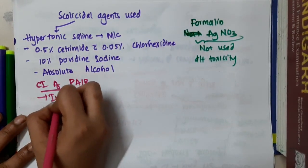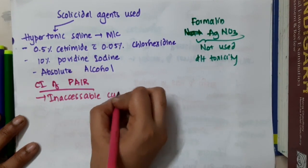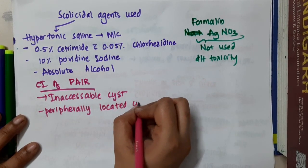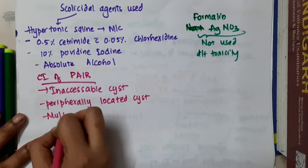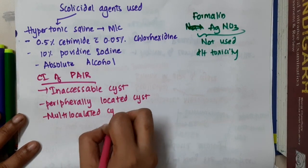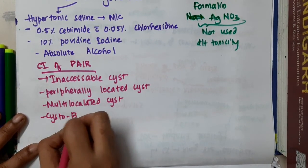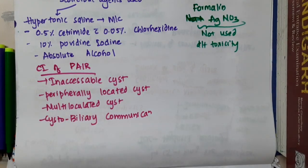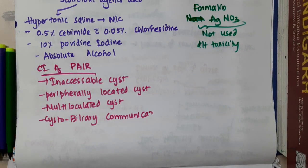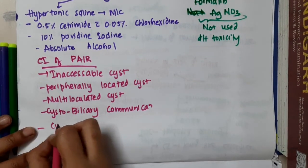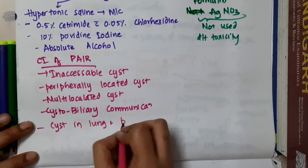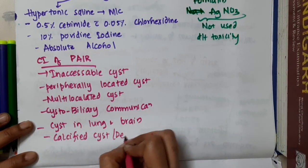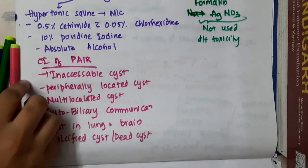Contraindications for the PAIR technique include inaccessible cysts, peripherally located cysts, multi-loculated cysts, cystobiliary communication, cysts in the lungs or brain, and calcified (dead) cysts.